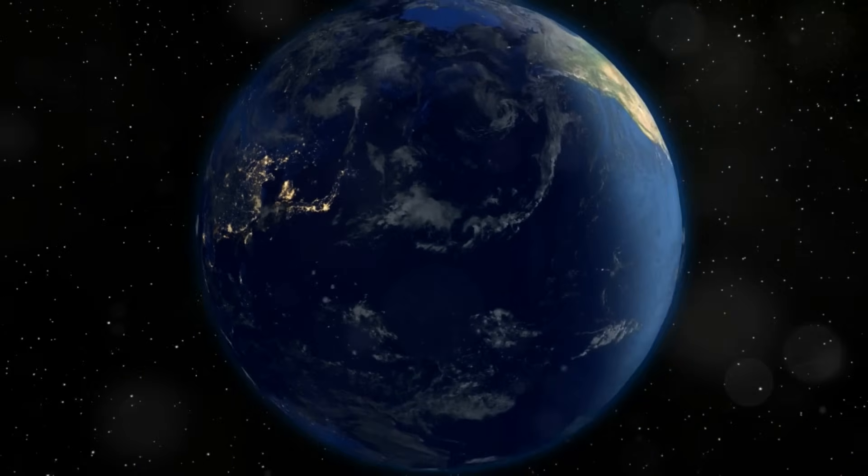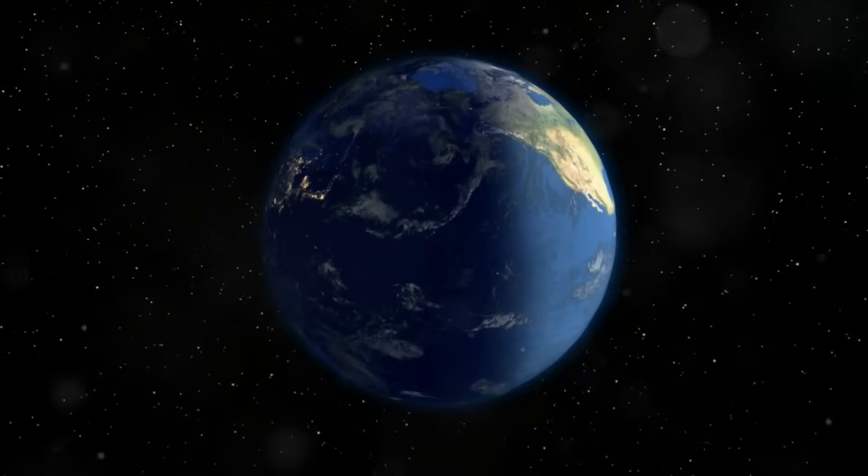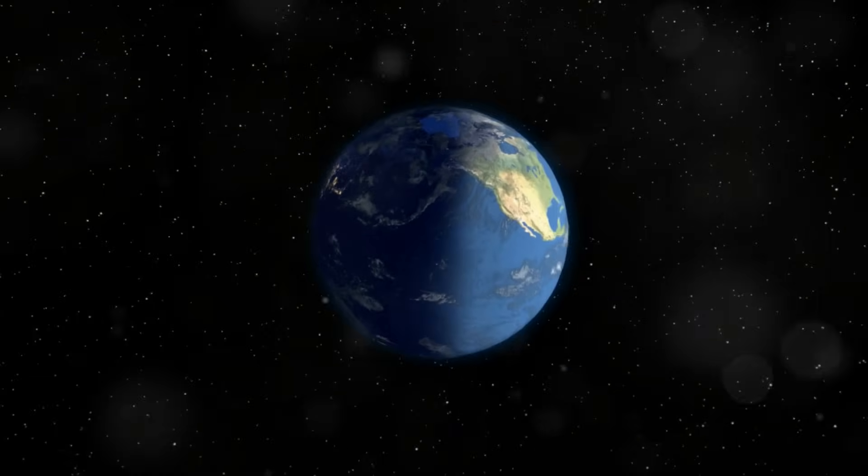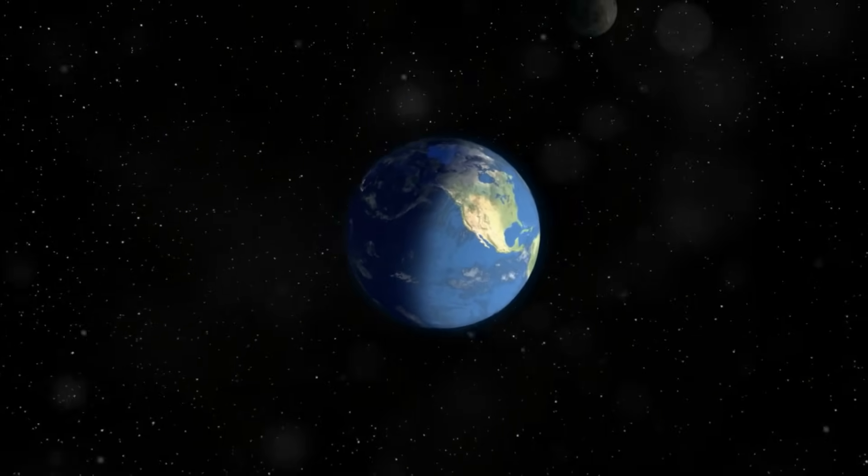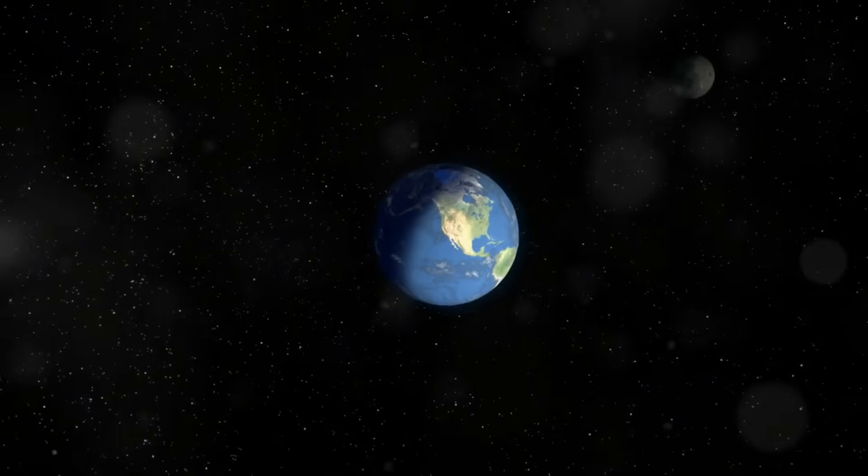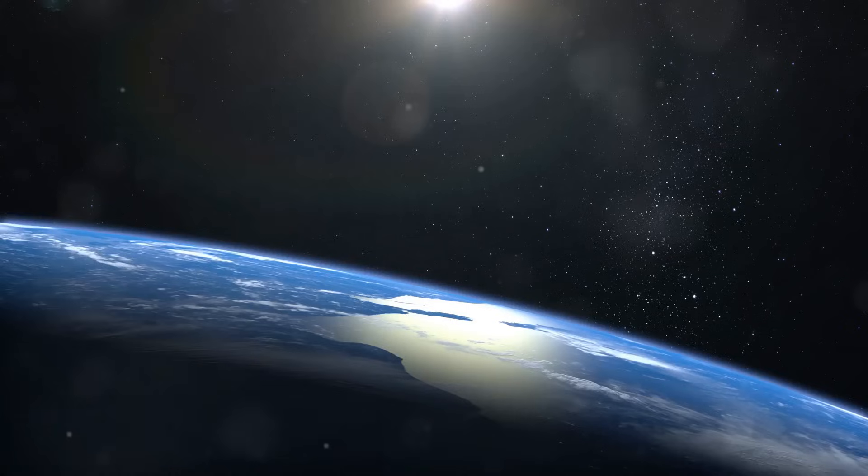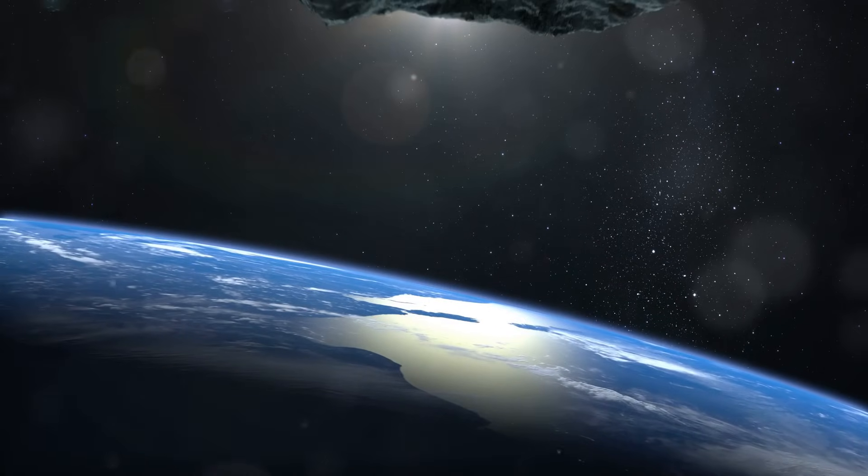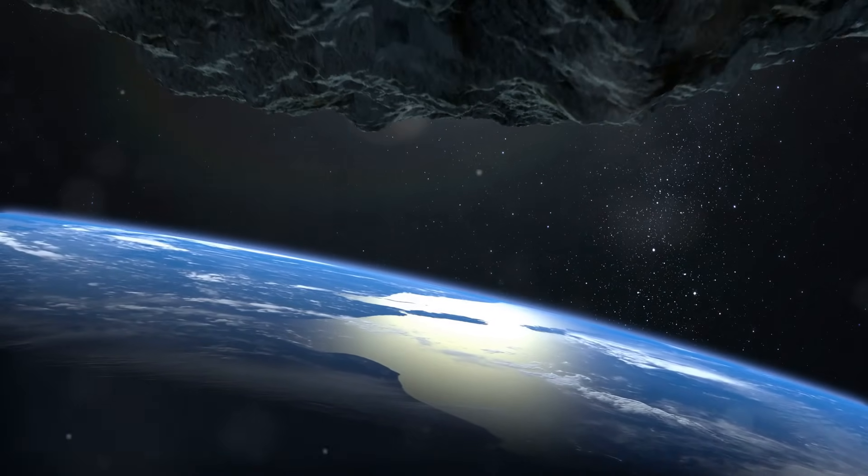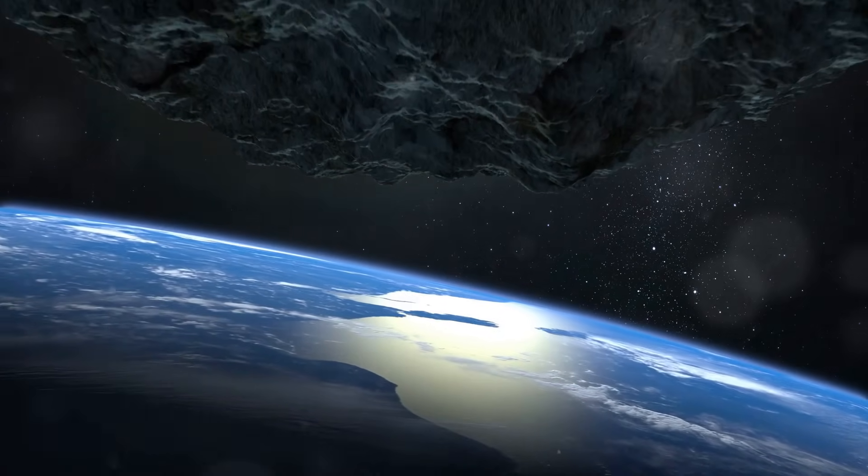Earth also has a protective atmosphere that shields us from harmful radiation. Our atmosphere is a complex layer of gases that not only provides us with the air we breathe, but also acts as a shield against the Sun's harmful ultraviolet rays and cosmic radiation. The ozone layer, in particular, plays a crucial role in protecting life on Earth.